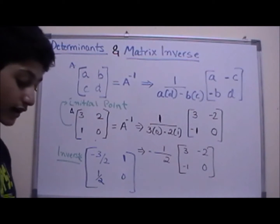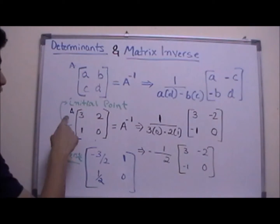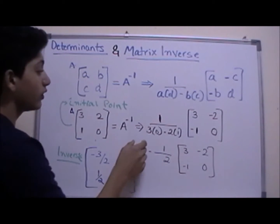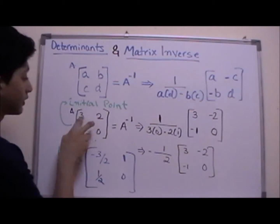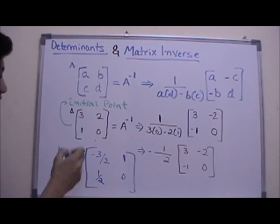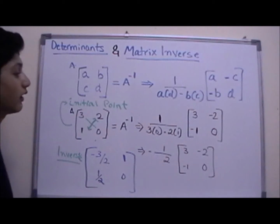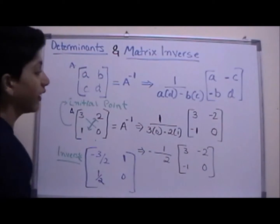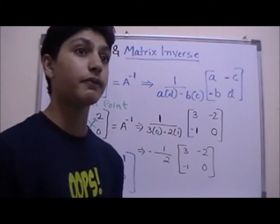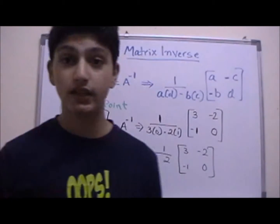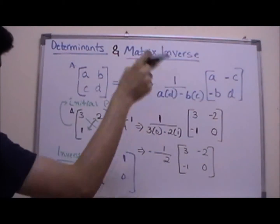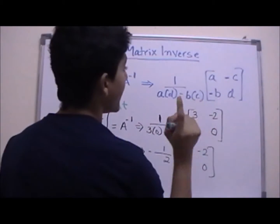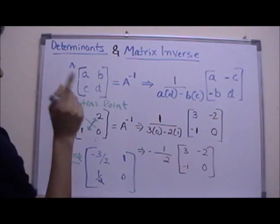Let's work through an example. We have matrix A: three, two, one, zero. To find the inverse, take one over the determinant. Using the X sign: three times zero minus two times one. You don't need to memorize the formula — just remember the X pattern and the minus sign.